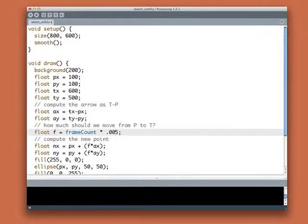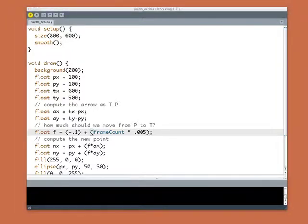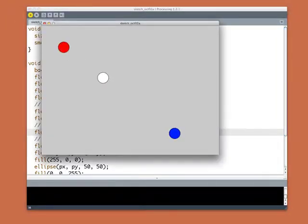And, in fact, if we made F negative to begin with. Let's say minus 0.1 plus frame count times that tiny number. Then, the ball should start on the wrong side. And there it is. It started to the upper left of the red dot. And now, it's moving down into the right. So, let's look at the code again.